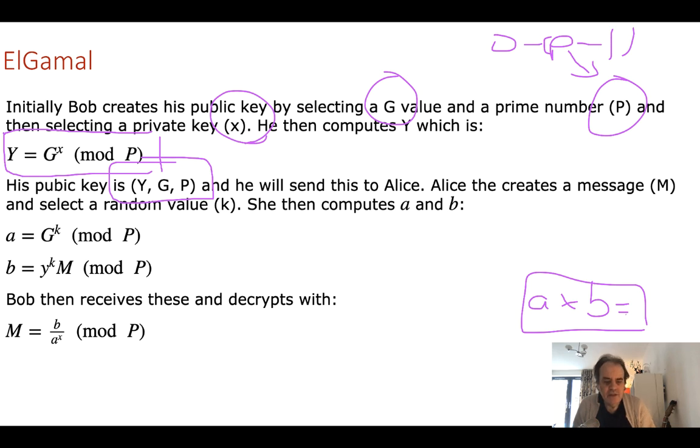Then he sends this to Alice, and then Alice takes the message and calculates an A value. So A is G to the power of K mod P, where she creates a random number K for the message. Then she'll take the Y value that Bob passed as part of his public key, raises it to the power of K, and then multiplies that by M and again takes mod P. So the cipher of the message is A and B.